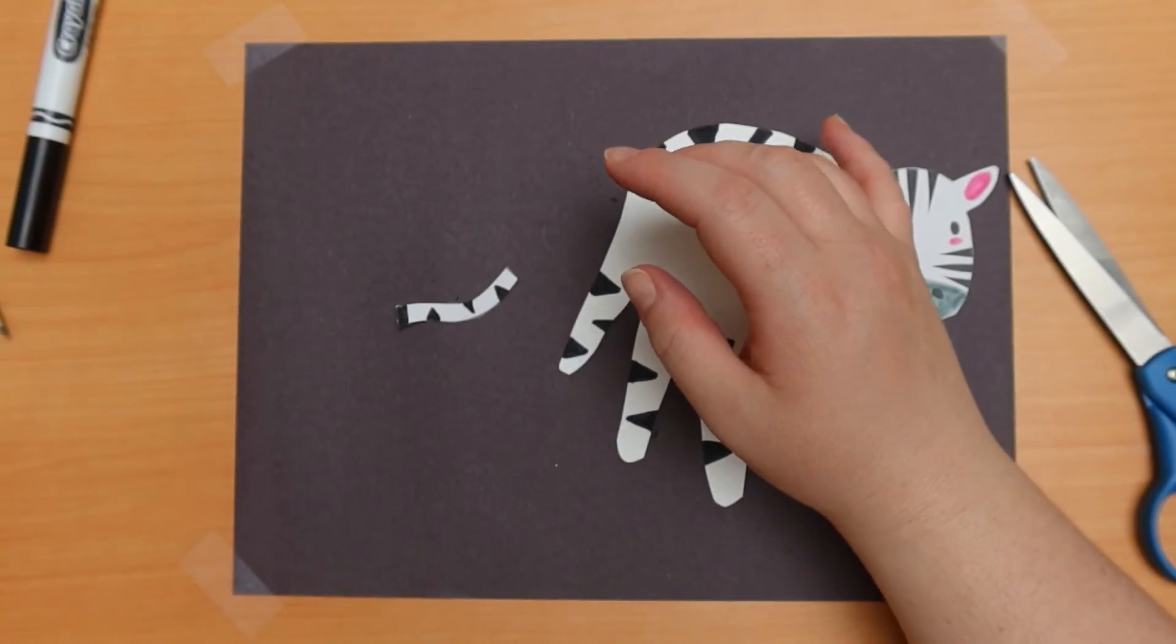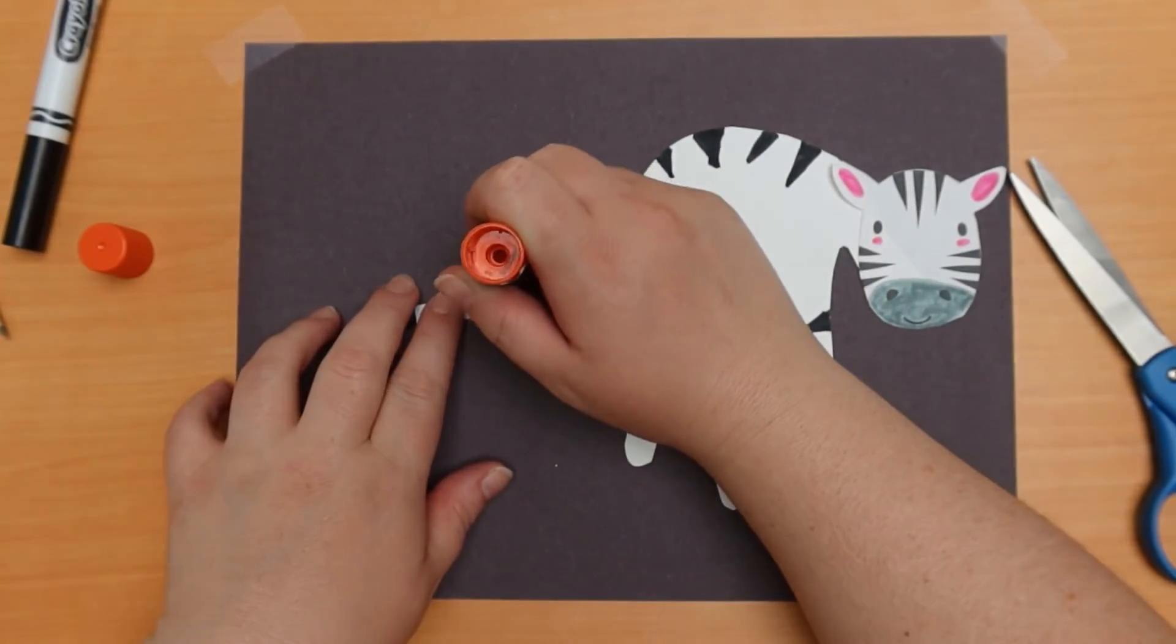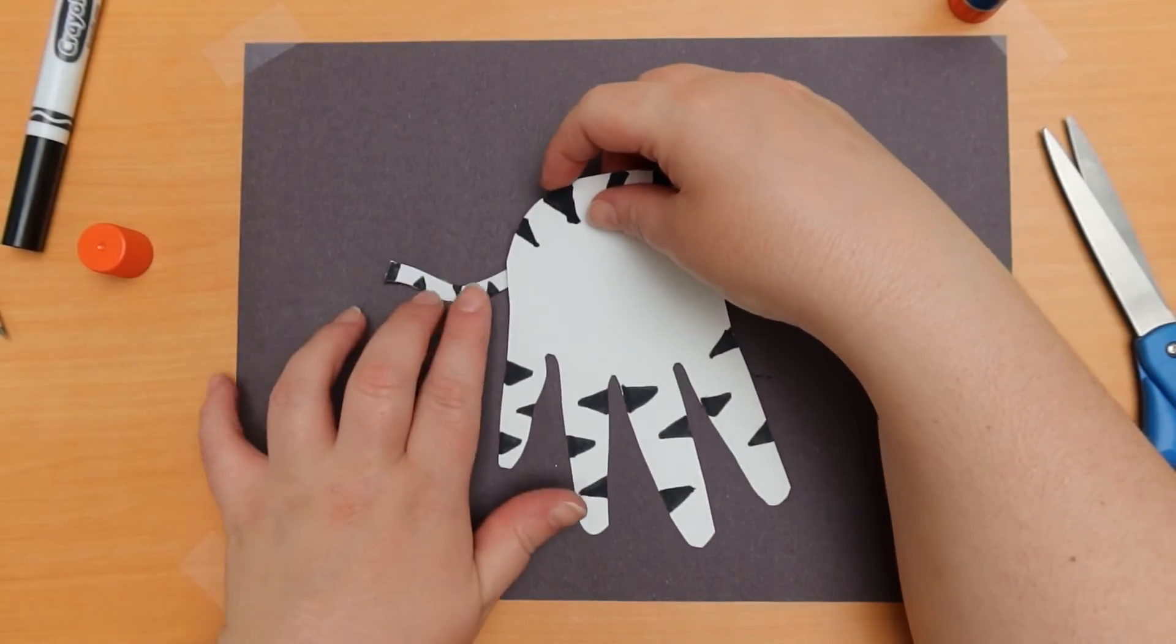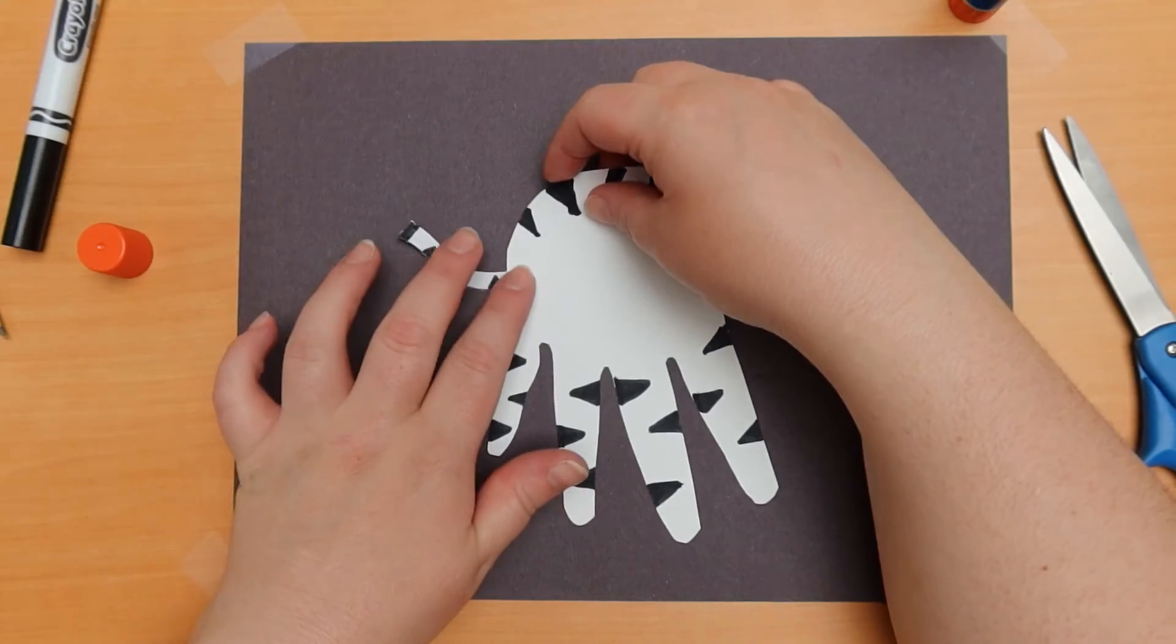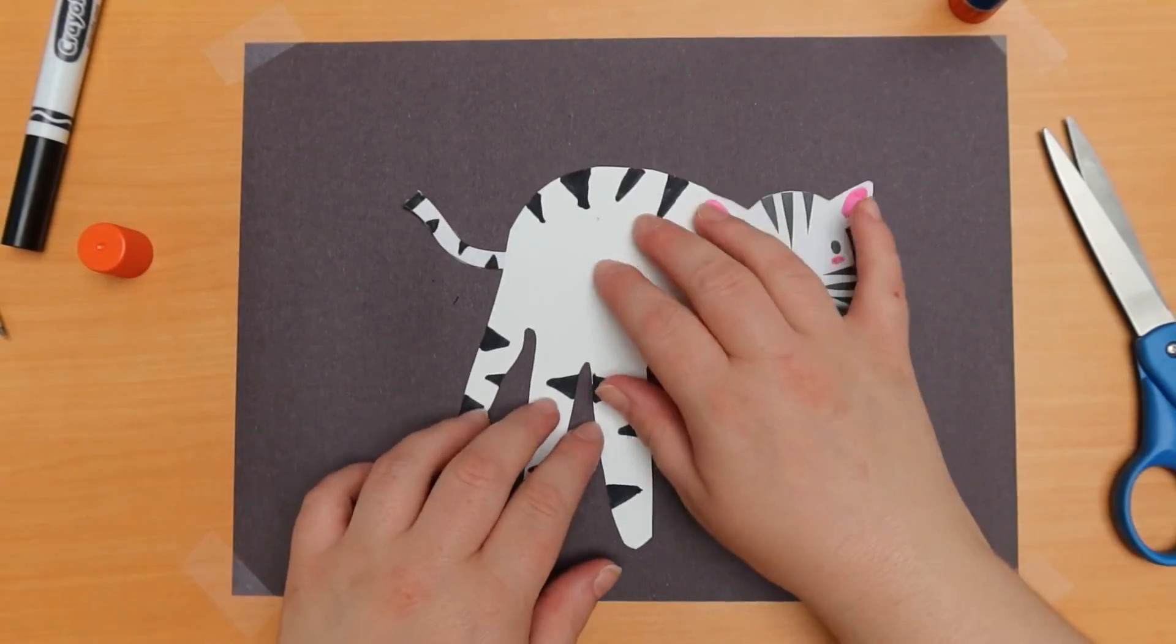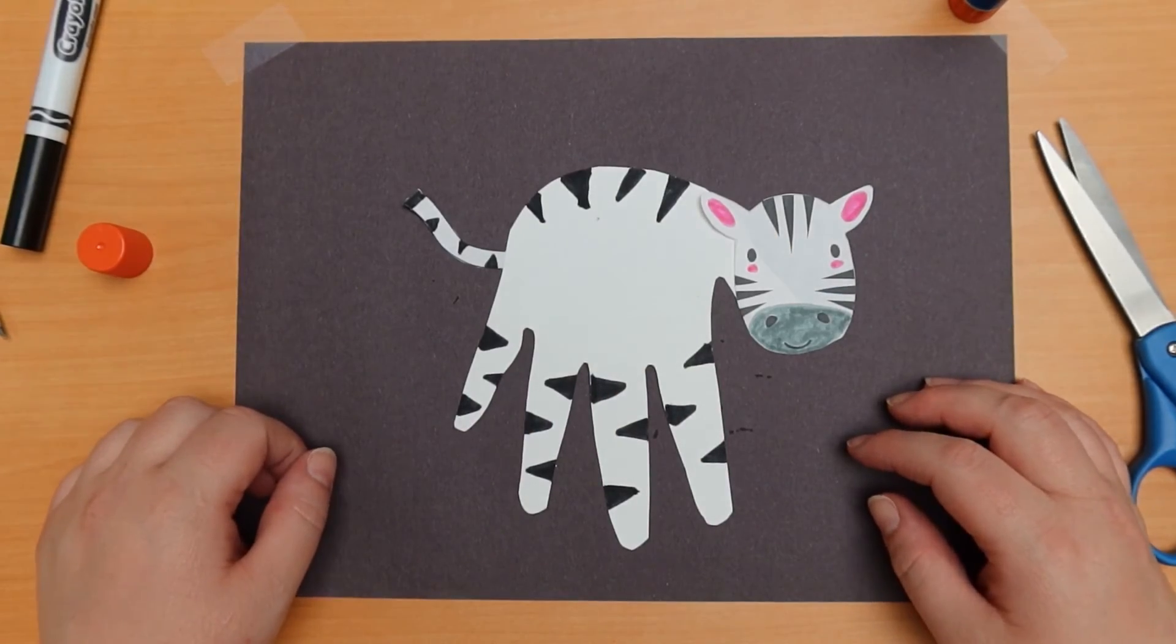To finish, we will glue the tail. And I am going to glue it right about there. With that, you have a friendly zebra friend.